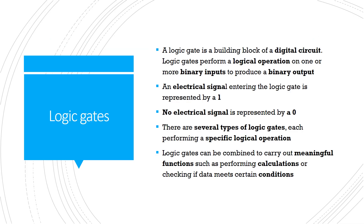In this chapter we will be talking about all the things related to boolean logic. It contains logic gates, logic circuits, logical expressions, and a lot of other things as well. A logic gate is basically the building block of a digital circuit. It can perform a logical operation on one or more binary inputs to produce a binary output. An electrical signal entering the logic gate is represented by a 1, and no electrical signal is represented by a 0. Logic gates can be combined to carry out meaningful functions such as performing calculations or checking if data meets certain conditions.